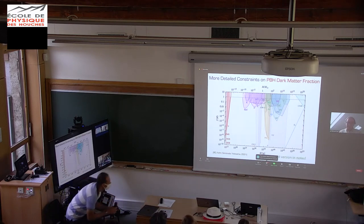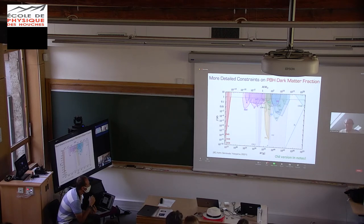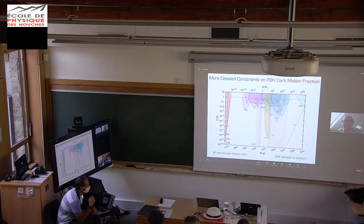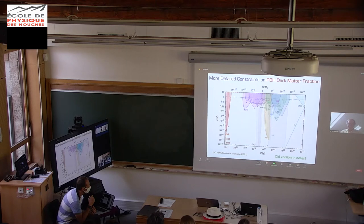These constraints are constantly changing — every day almost you have another paper coming out which changes them. This diagram has gone through many iterations. What I'm showing now will be the published version; the one in the notes was an older version from about a year ago. There was also a question about why F goes larger than 1: astrophysically F can never exceed 1, but because of error bars and the evolution of constraints, the diagram goes a bit above that.